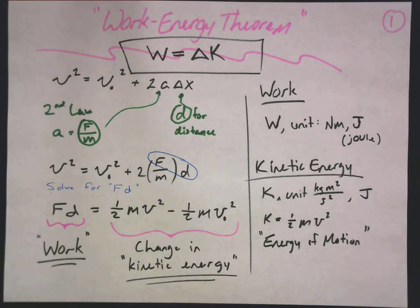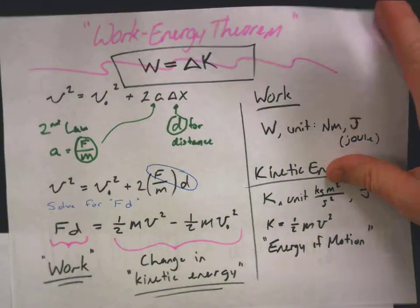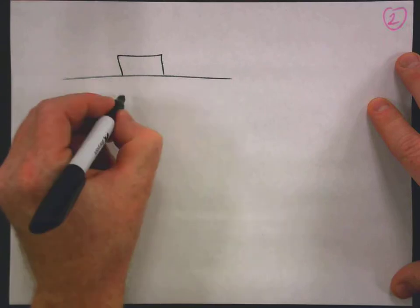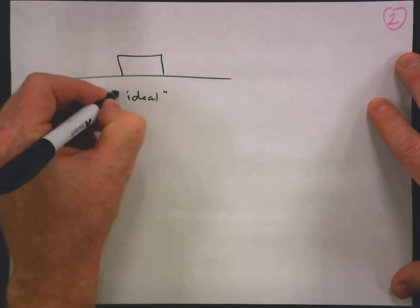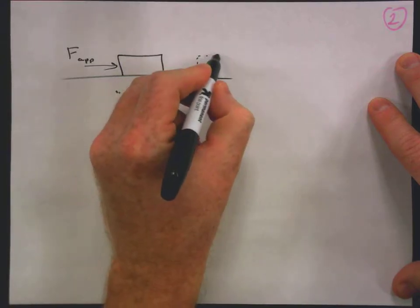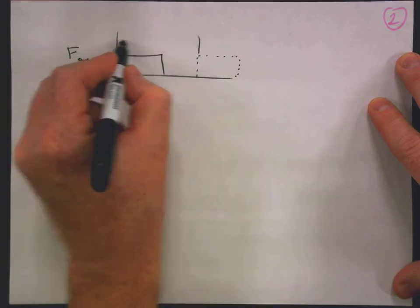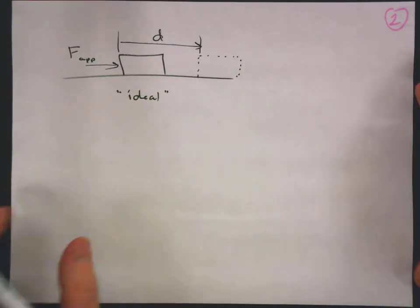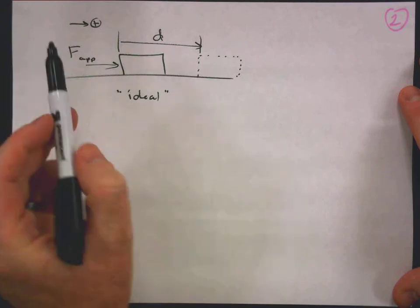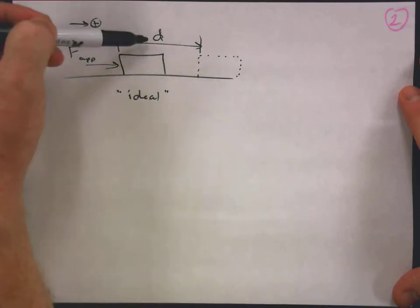Now let's focus more on the work side of things. Consider a box on a frictionless surface — we apply a force to get it moving across a distance. The force is in a certain direction, let's call that positive x, and the distance traveled is in that same direction. When the force and the distance traveled are parallel to each other, calculating work is quite straightforward.